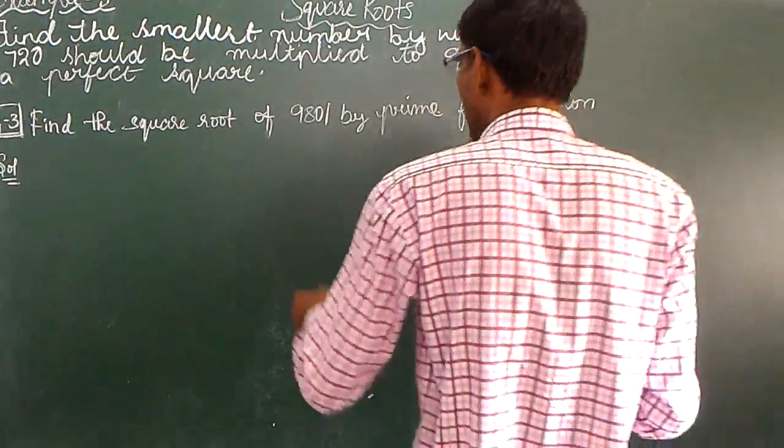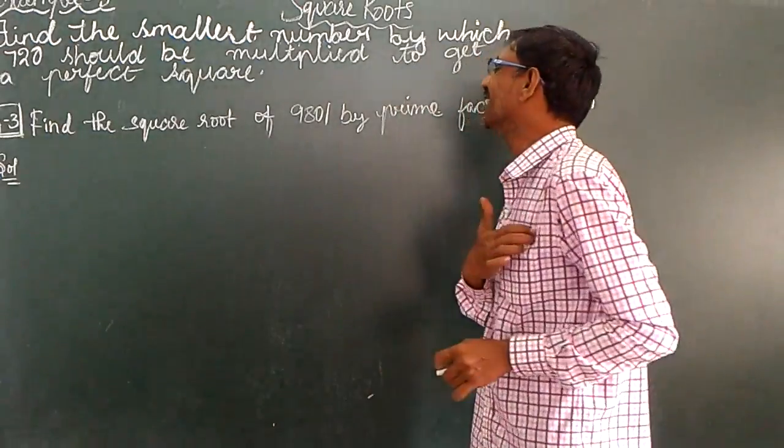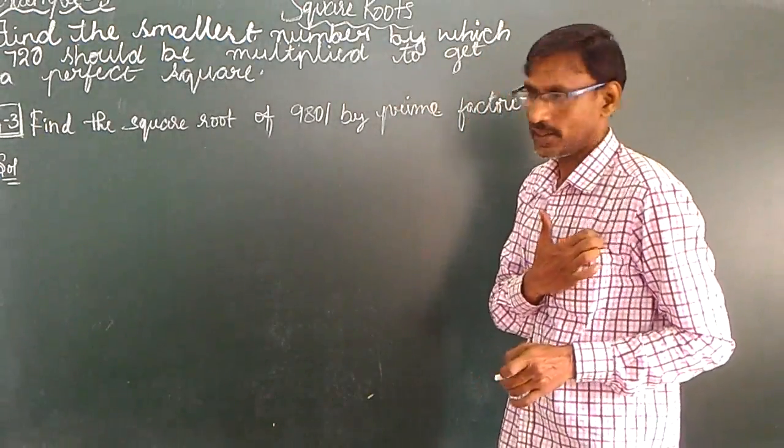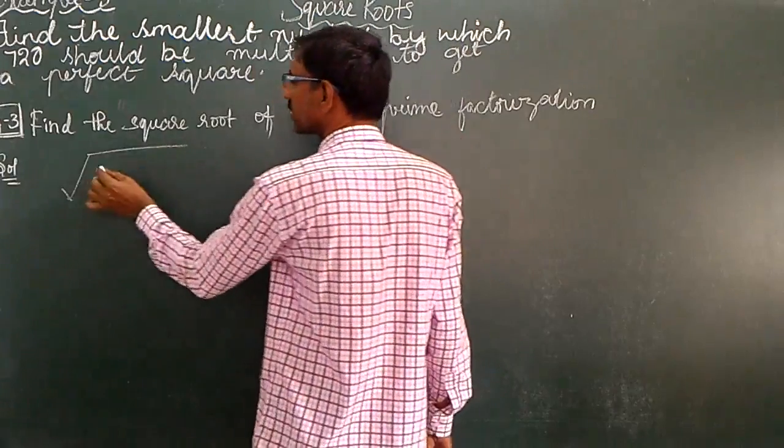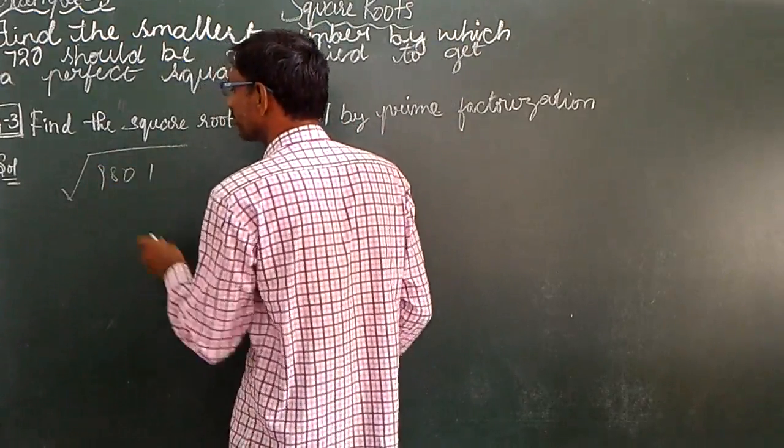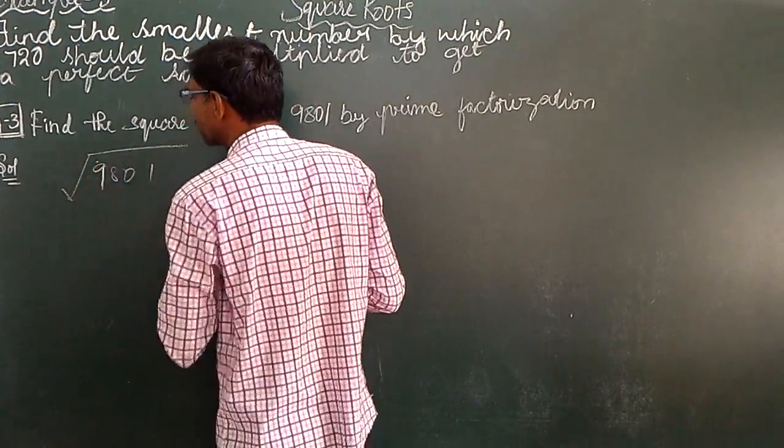See this one. Find the square root of 9801, correct? Square root, this is my sample. This is my square root: 9801, 9801.